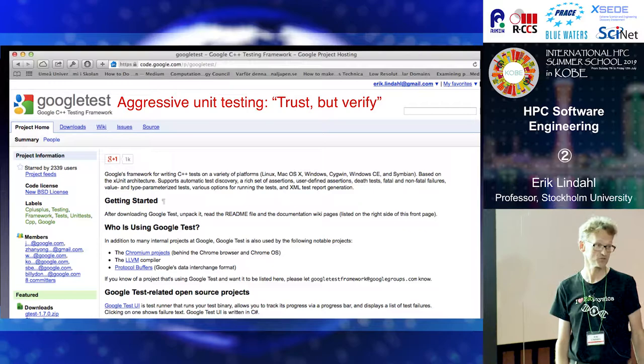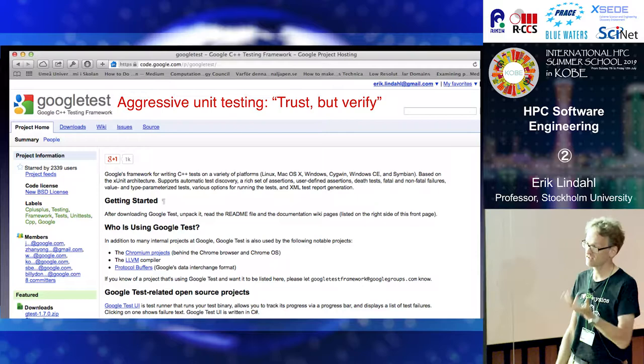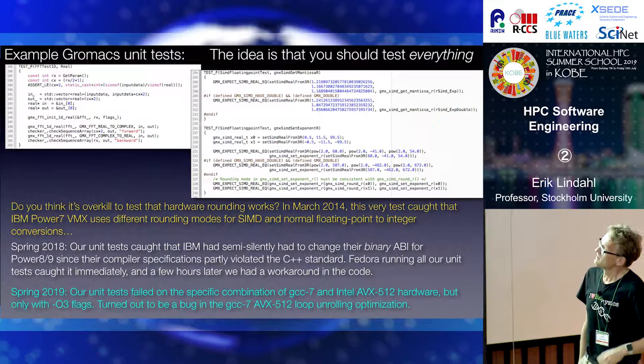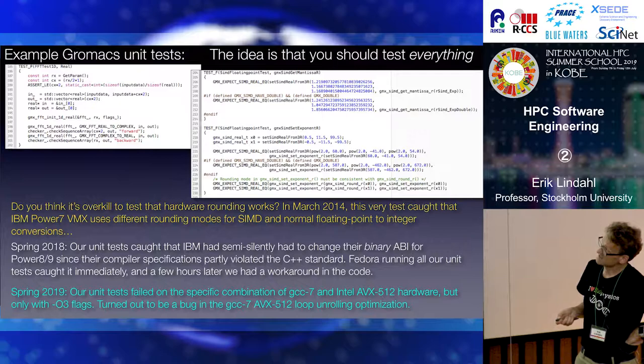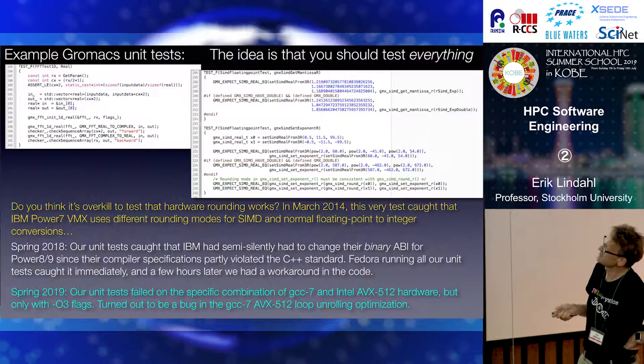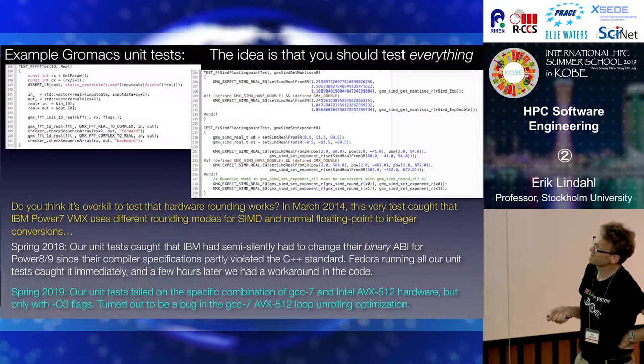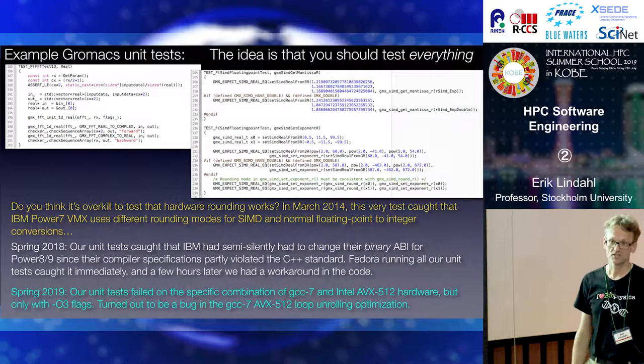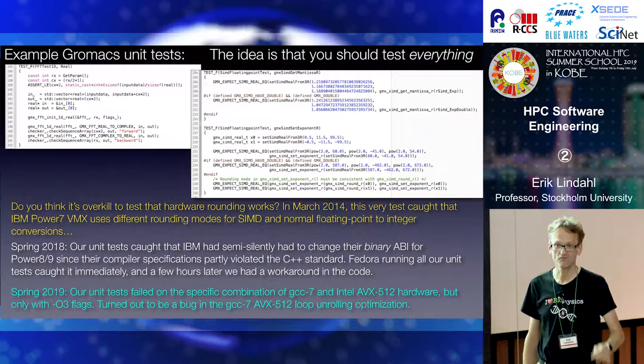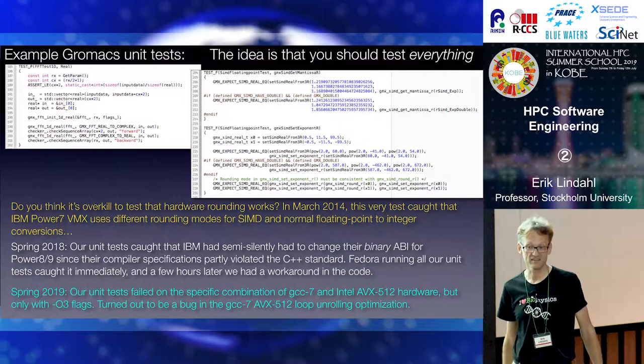There are a bunch of different testing frameworks. I happen to like Google Test, so I've implemented that in this repository. It's portable everywhere, including the K computer, and small and simple enough that we can extend it. You write small tests — typically five or ten lines — testing, for instance, a one-dimensional FFT. We have like 600-700 tests in GROMACS right now. Whenever I compile the code, I just issue make check, and this framework runs all the tests and reports how many failed, where they failed, why they failed, and on what specific line.